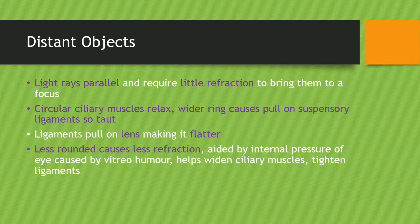When viewing distant objects the light rays are parallel and require little refraction to bring them to focus. The circular ciliary muscles relax, meaning the wider ring pulls on the suspensory ligaments, making them taut. These taut ligaments then pull on the lens making it flatter and less rounded, causing less refraction. This is aided by the internal pressure of the eye from the vitreous humour. In summary: for distant objects, ciliary muscles relax → suspensory ligaments become taut → lens is pulled flat.